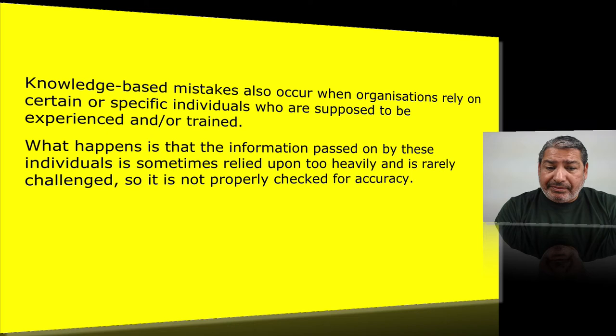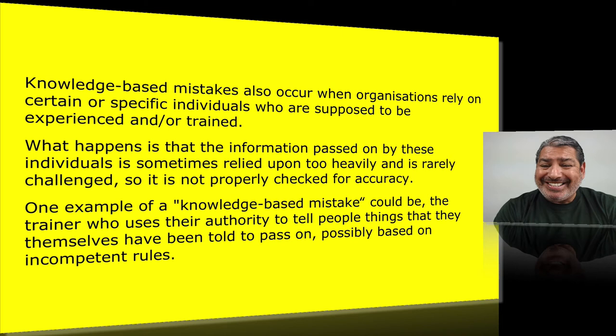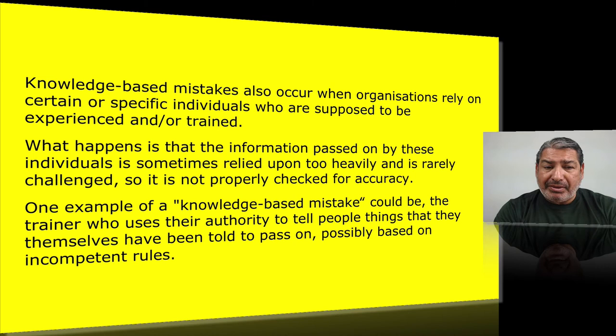One example of a knowledge-based mistake could be the trainer who uses their authority to tell people things they themselves have been told to pass on — possibly based on incompetent rules. They were trained by someone who was trained by someone who was trained by someone. Someone made up a rule, a rule-based mistake got passed down, they accepted that as knowledge without challenging it, and now you have a knowledge-based mistake.